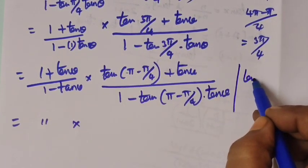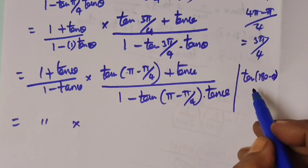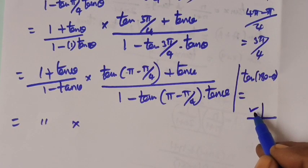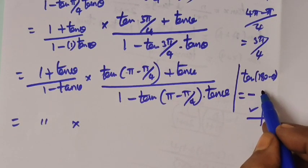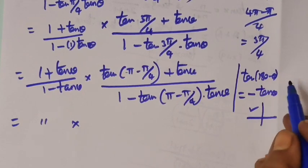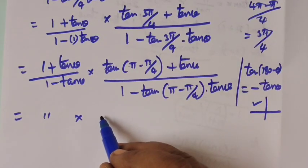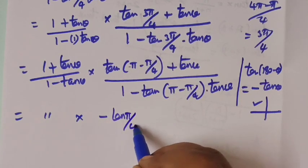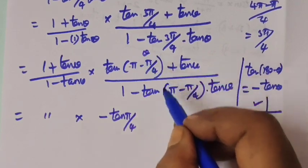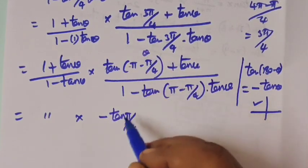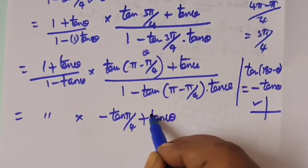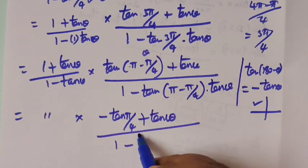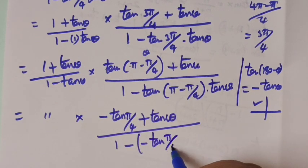Using tan a plus tan b by 1 minus tan a tan b, the first factor is 1 plus tan theta by 1 minus tan theta. For the second factor, 3pi by 4 equals pi minus pi by 4. We use the formula: tan of 180 minus theta is in the second quadrant, where tan is negative, so tan of 180 minus theta equals minus tan theta. Therefore tan of 3pi by 4 plus theta gives minus tan of pi by 4 plus theta, which is minus tan 5 by 4 — that is, minus tan theta for that argument.